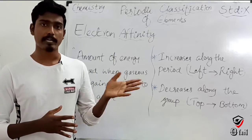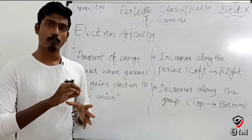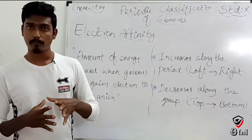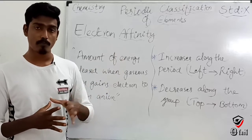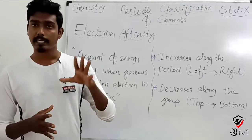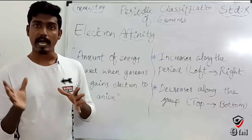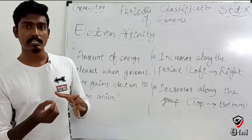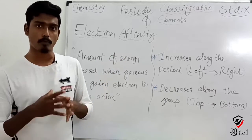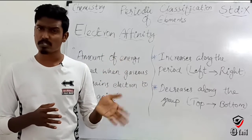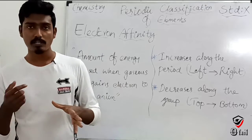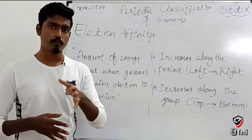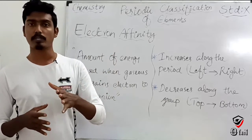In the previous topic we were talking about the cation — we were removing the electron from the neutral atom. Now for electron affinity, we are adding an electron to the neutral atom. If an electron is added, we can remove energy from the neutral atom.